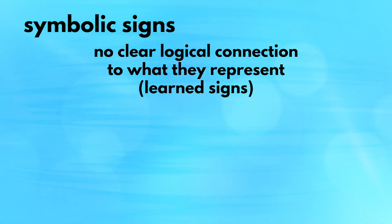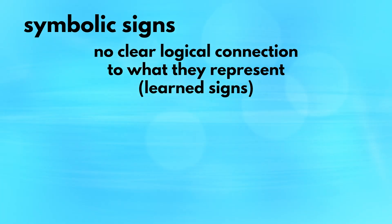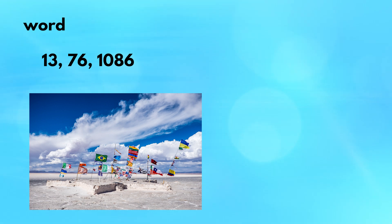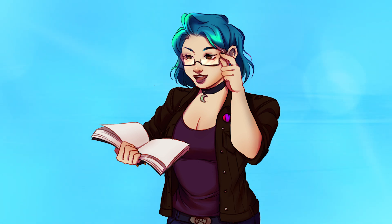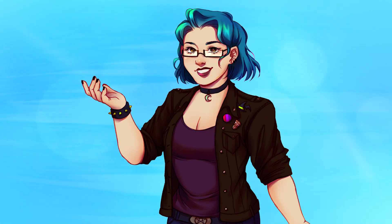Finally, symbolic signs. In my experience, this is the sign that tends to trip people up the most until they're given some concrete examples. Symbolic signs are the most abstract of these three categories — there's no clear logical connection between them and what they represent. Consider some examples: words in general, numbers, flags from countries, certain corporate logos. You have to be told what these are; you have to be given context in order to understand the representation between these signs and their meaning. Otherwise, they're just random shapes.